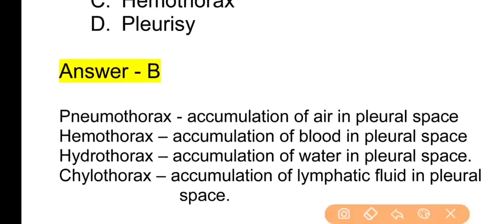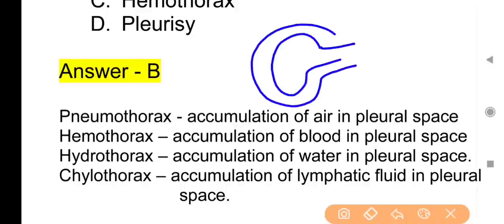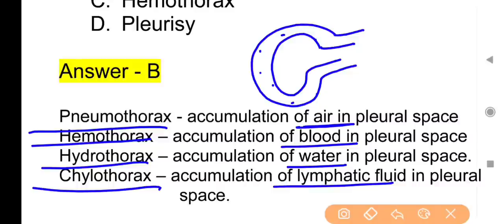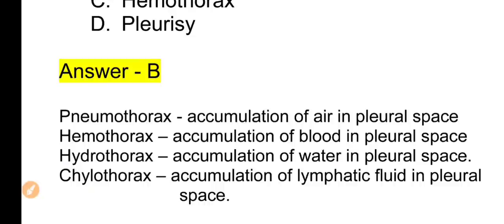Some typical terms important from an exam point of view: if air accumulates abnormally between the lungs and chest wall, it is Pneumothorax. If blood accumulates abnormally, it is Hemothorax. If water accumulates, it is Hydrothorax. If lymphatic fluid accumulates, it is Chylothorax — the prefix 'chylo' denotes lymphatic fluid.